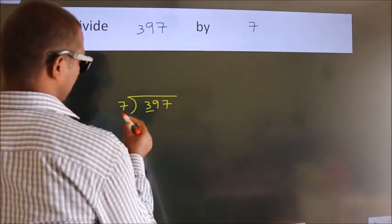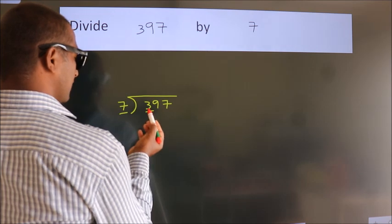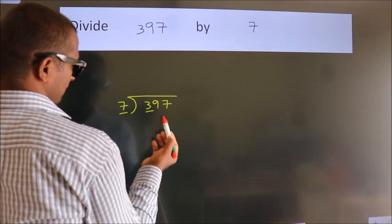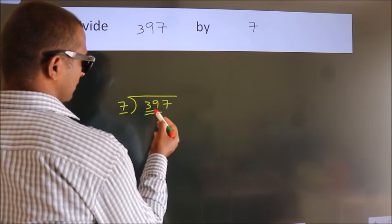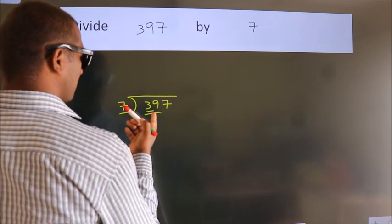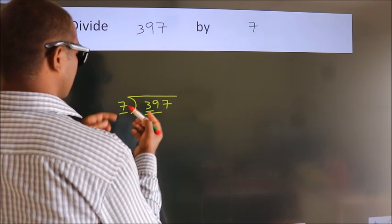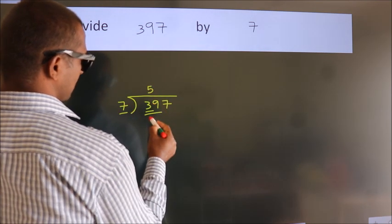Here we have 3, here 7. 3 is smaller than 7, so we should take 2 numbers: 39. A number close to 39 in the 7 times table is 7 times 5 equals 35.